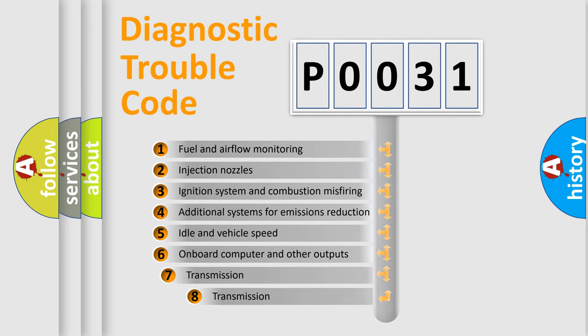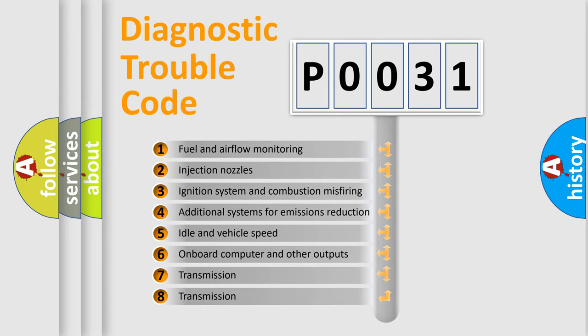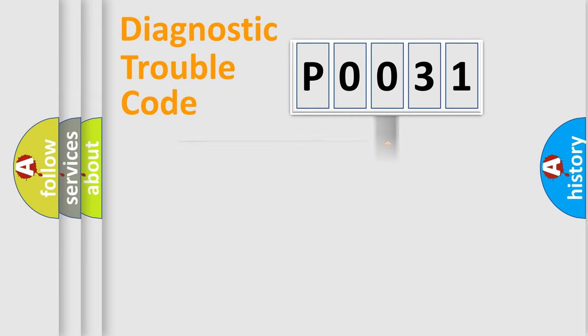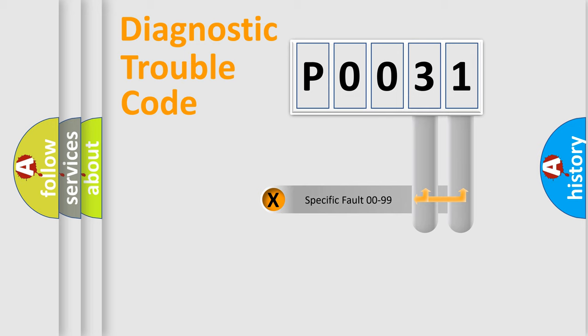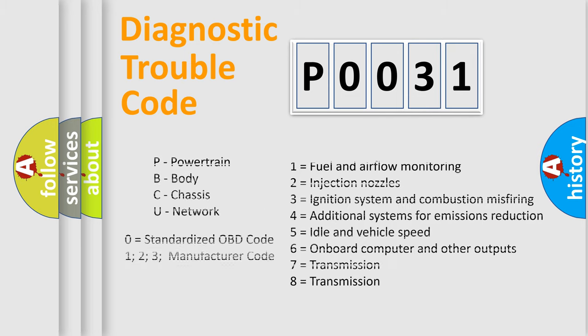The third character specifies a subset of errors. The distribution shown is valid only for the standardized DTC code. Only the last two characters define the specific fault of the group. Let's not forget that such a division is valid only if the other character code is expressed by the number zero.